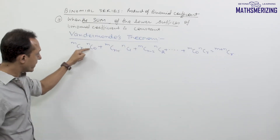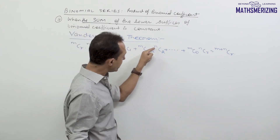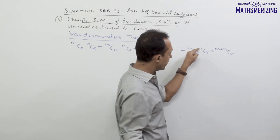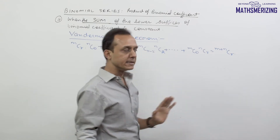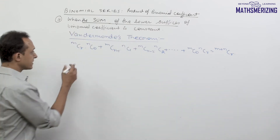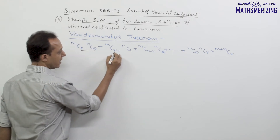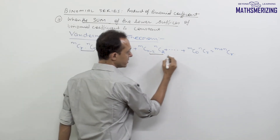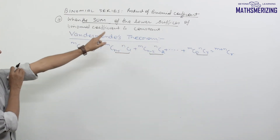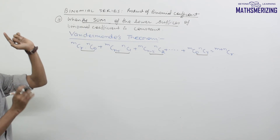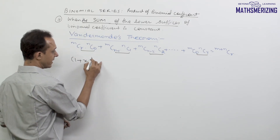Let us consider another binomial series: mCr·nC0 + mC(r-1)·nC1 + mC(r-2)·nC2 + ... + mC0·nCr, and we have to prove it equals m+nCr. The sum of suffixes is r, then (r-1)+1 = r, (r-2)+2 = r, and 0+r = r, so the sum of lower suffixes is constant.